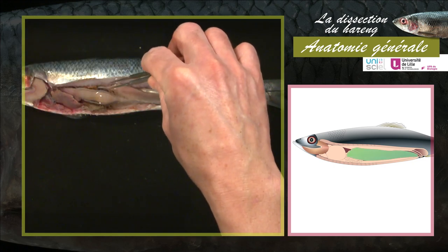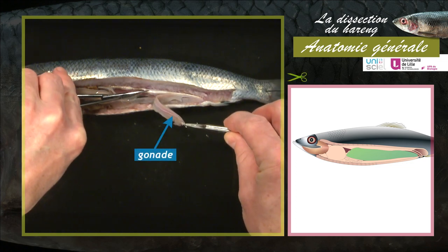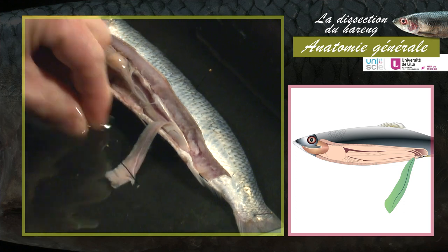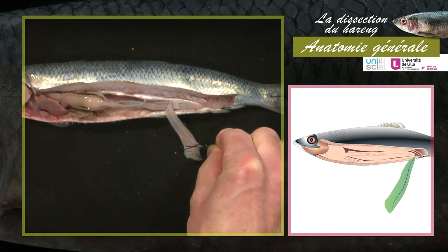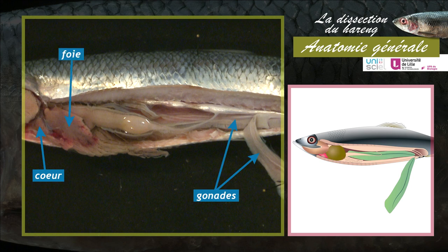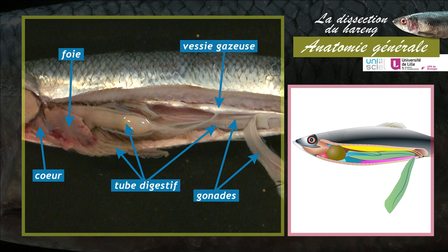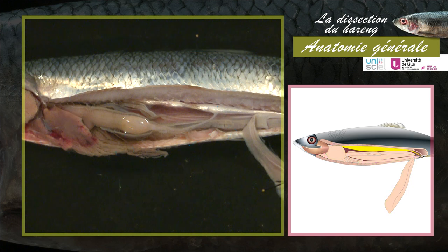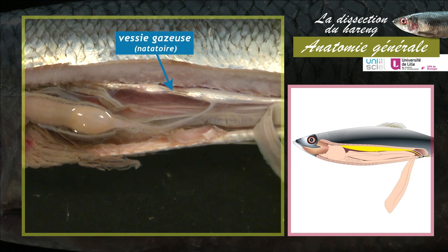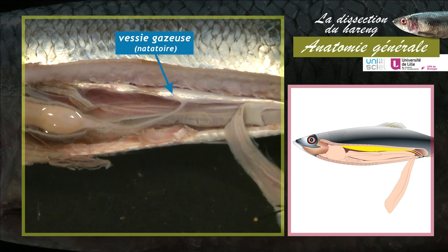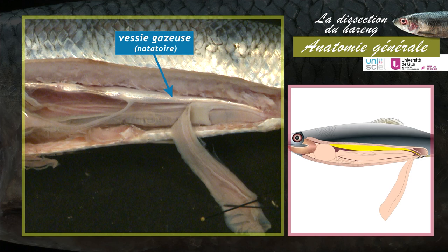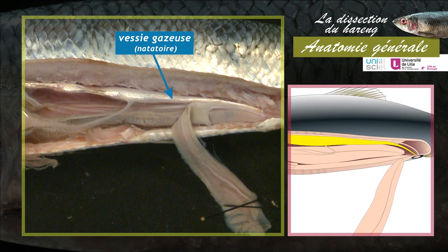Pour observer les organes de la cavité abdominale, soulevez la gonade gauche, sectionnez les vaisseaux sanguins situés dans la partie antérieure, rabattez-la et fixez-la en laissant en place le conduit qui la relie à la papille anogénitourinaire. Sont maintenant visibles le cœur, les gonades, le foie, le tube digestif et la vessie gazeuse. La vessie gazeuse ou vessie natatoire est un organe de couleur argentée situé dans la partie dorsale de la cavité abdominale. Elle joue surtout un rôle hydrostatique : le gaz qu'elle contient sert à la flottaison de l'animal. La vessie natatoire est reliée à l'estomac par un conduit, le canal pneumatique.